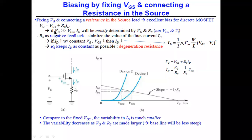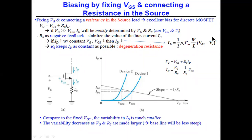If ID increases, the voltage drop across RS increases. Since VG is constant, VGS must decrease. A decrease in VGS causes ID to decrease from the MOSFET equation. So an increase in ID is compensated: RS brings ID back toward the original value, thus giving stability to the bias point.